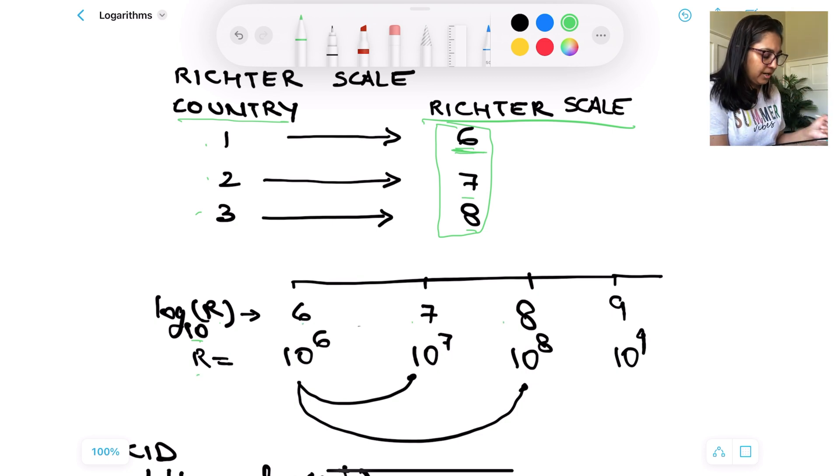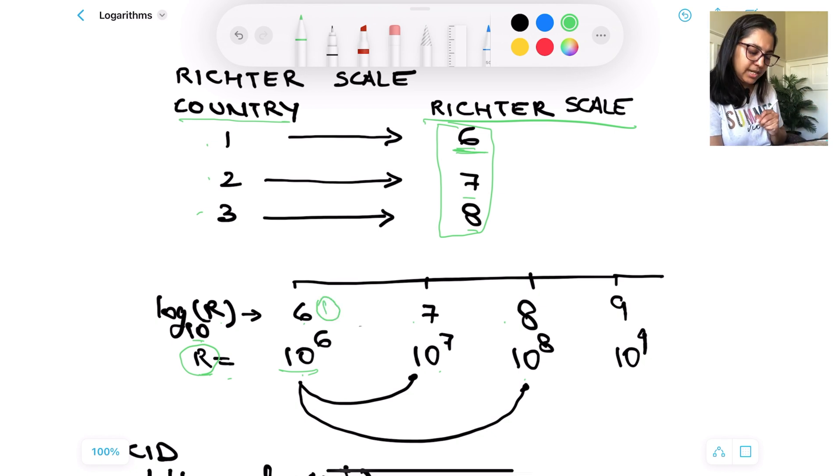If R is that number for the Richter scale, 6, 7, 8, and I just put in a 9 there as well, and if we plot it on a logarithmic scale, this number R is nothing but 10^6 based on the definition of the logarithm, 10^7, 10^8, and so on and so forth. Now if we were to answer the question of this.